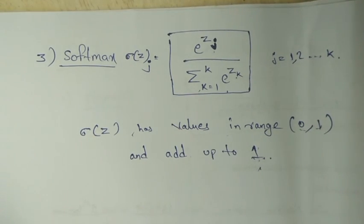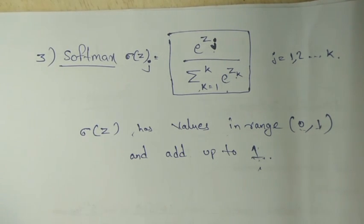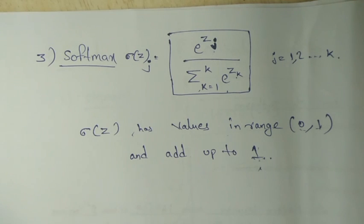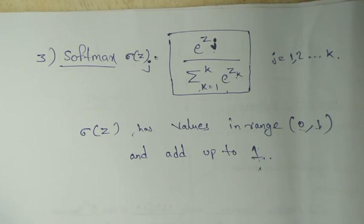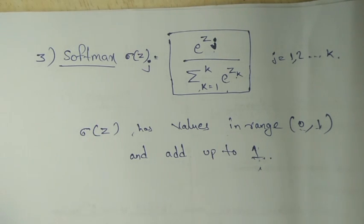This is one type of activation function. There are different types of activation functions, and we will use different activation functions for different types of problems. When we want a linear output, we will use a different type of activation function. When there is a non-linear output, we will use a different type of activation function. So, depending upon the output, we will use the appropriate activation function. This is how the activation function works in a neural network.